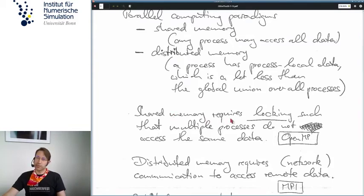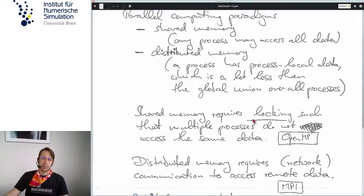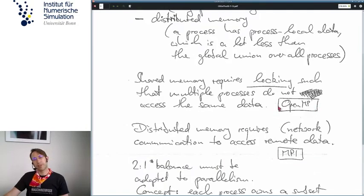Shared memory, you can imagine, requires some kind of locking such that multiple processes don't write into the same memory location at the same time. Then we wouldn't know which of the two results would actually be valid in the end. So synchronization is a major thing to be thought about for shared memory computing. For distributed memory computing, we just basically need some means to access remote data, and this is something that goes over the network. So there are solutions for both. There is the OpenMP standard, which is addressed originally at shared memory systems, and there is the MPI standard, which is called Message Passing Interface, which is targeted at networked computer systems.